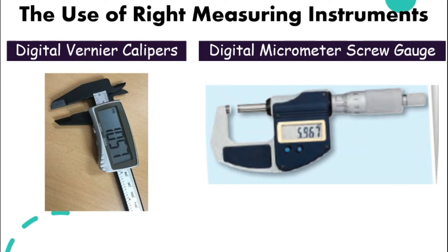For these two instruments, we have digital versions as well — digital vernier calipers and digital micrometer screw gauge. For the digital ones, it's very easy to read the measurement; you can just read your reading off the screen.